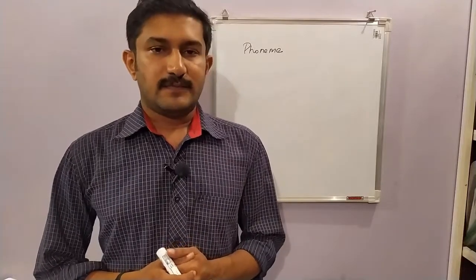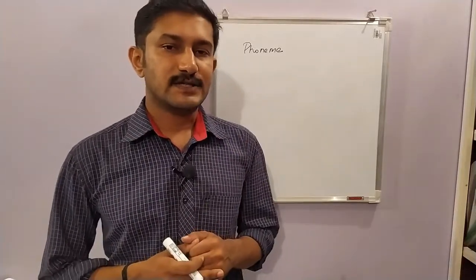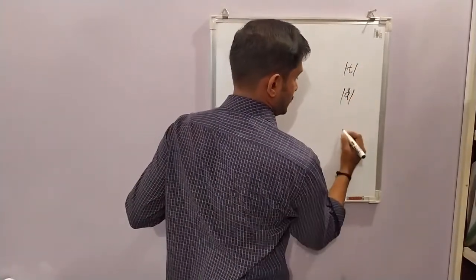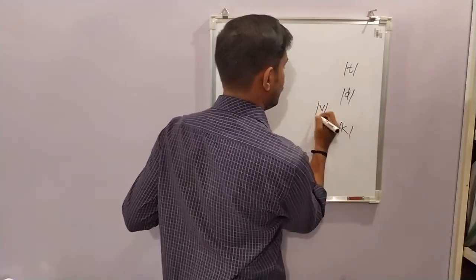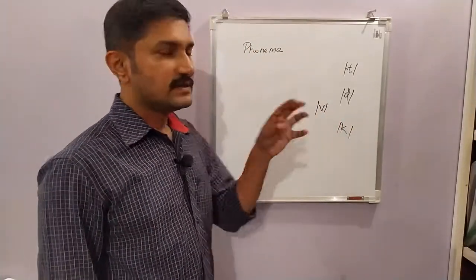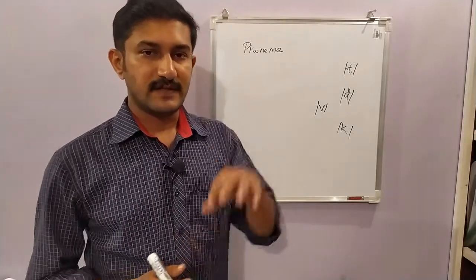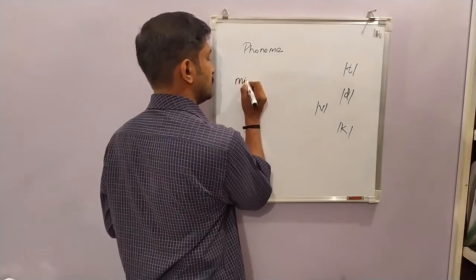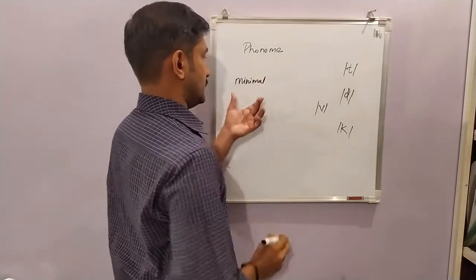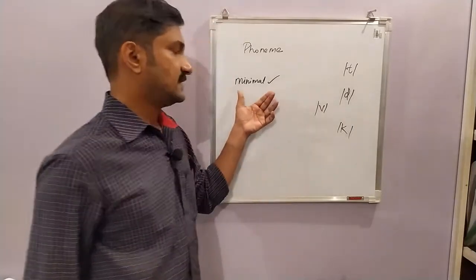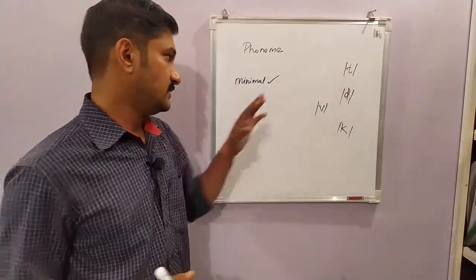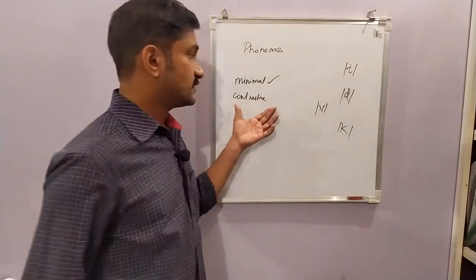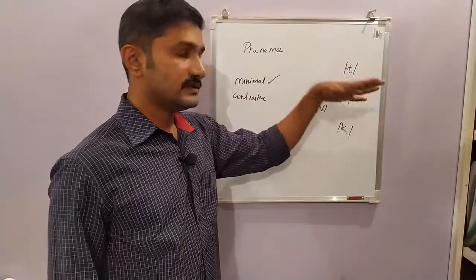Coming to the concept of phoneme: the 44 sounds in English are phonemes. A phoneme is the smallest unit in the sound system of a language. It is the minimal unit in the sense that it cannot be subdivided. It is also contrastive — contrastive in the sense that it contrasts with one another; each sound is contrasting with any other sound in the language.